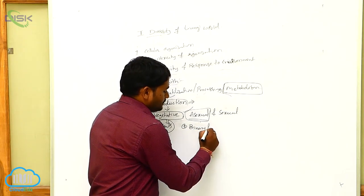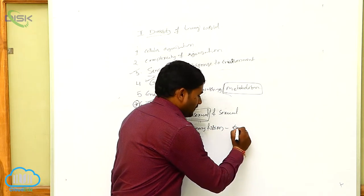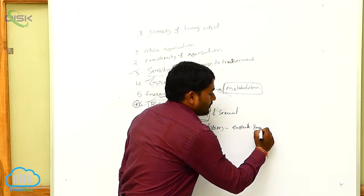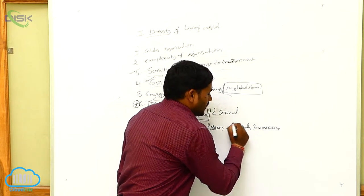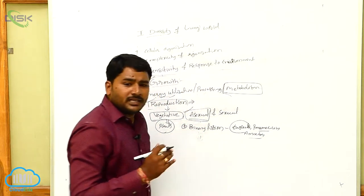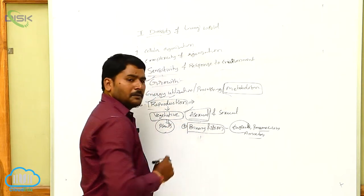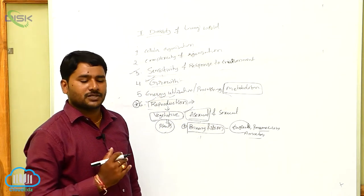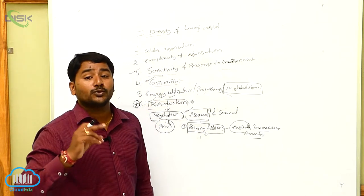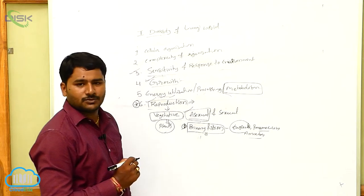The first type is binary fission. For example, Euglena, Paramecium, and Amoeba perform binary fission. Binary fission is a kind of asexual reproduction in which one parent individual is divided into two daughter individuals. That is called binary fission.